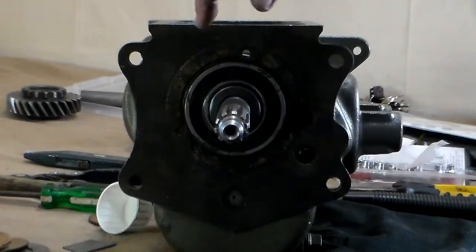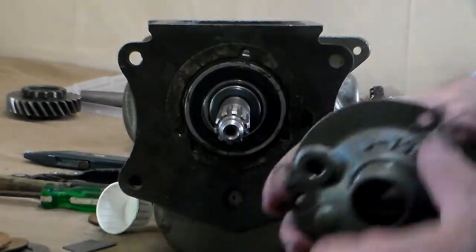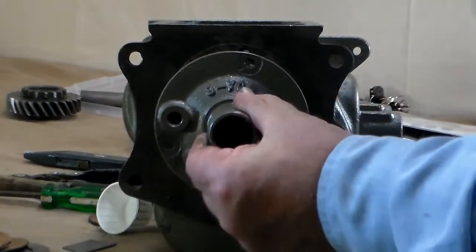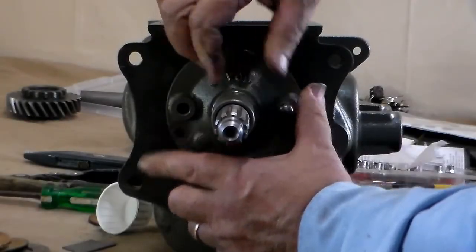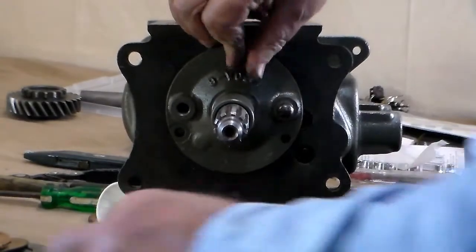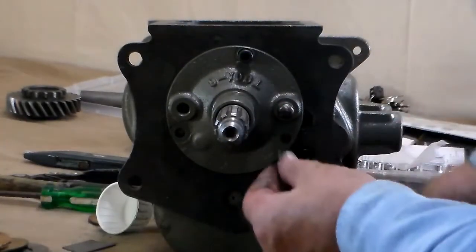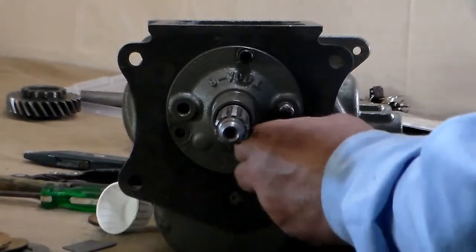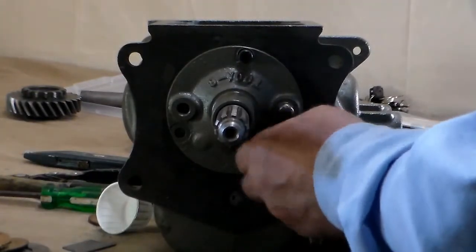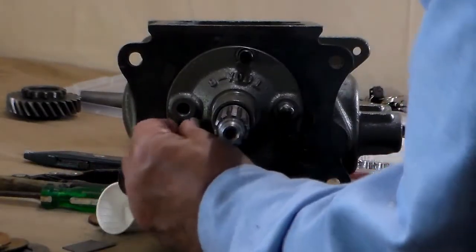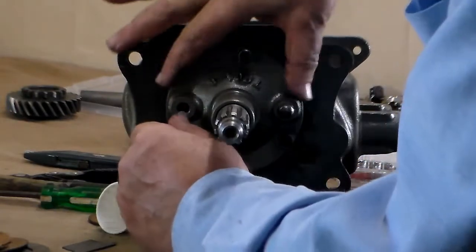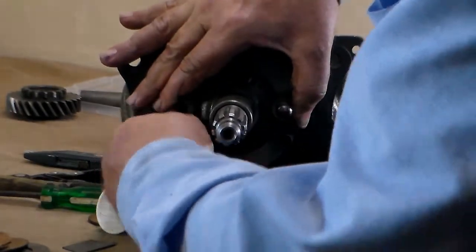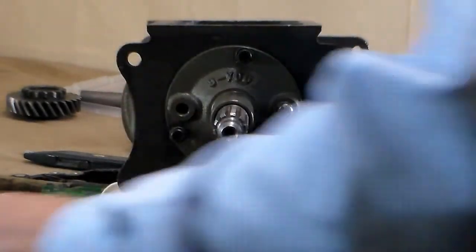We've installed the gasket with the FormaGasket on it. Now we're ready to install the bearing retainer. Don't do like I just did and not line up the holes properly prior to sliding it in. You can't slide it once you put it on because the gasket will move with it. There we go. Got all of them started.